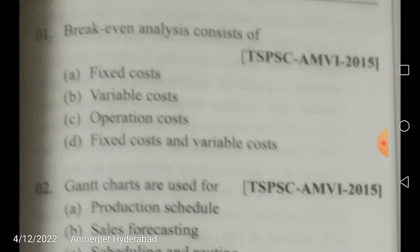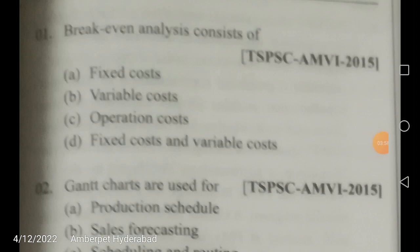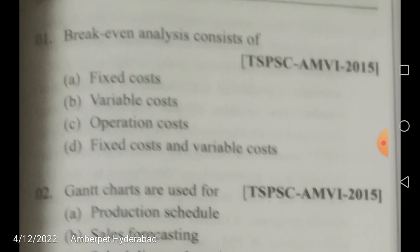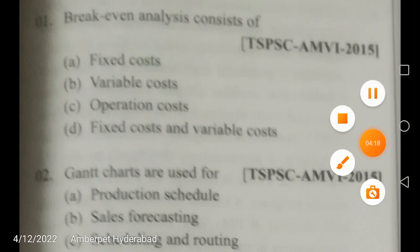Break-even analysis consists of fixed cost and variable cost, along with the price of the product produced. The break-even volume is the quantity that needs to be produced to equal total fixed cost and variable cost — it is the production quantity where there is no profit and no loss.